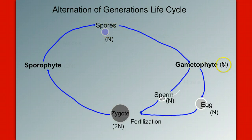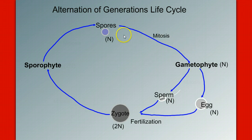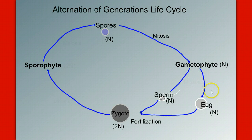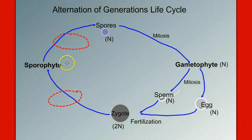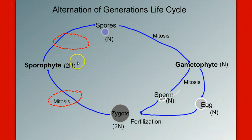Now write mitosis or meiosis from spore to gametophyte and from gametophyte to gametes. Mitosis gives us back what we started with, so haploid spore makes haploid gametophyte — mitosis. Gametophyte to gametes is also mitosis: haploid to haploid. It's fertilization that takes these two haploids to diploid. The sporophyte generation is diploid, so zygote to sporophyte is mitosis. And the diploid sporophyte makes haploid spores through meiosis.